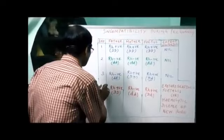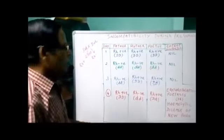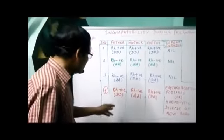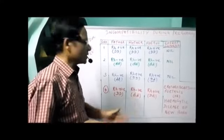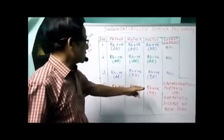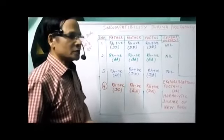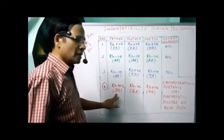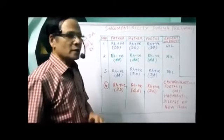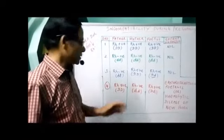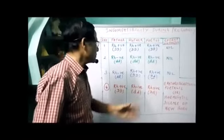But in the fourth marriage — the dangerous one — if father is Rh positive and mother is Rh negative, now the child or fetus will be Rh positive because D antigen is dominant over the recessive gene. So the fetus is Rh positive.